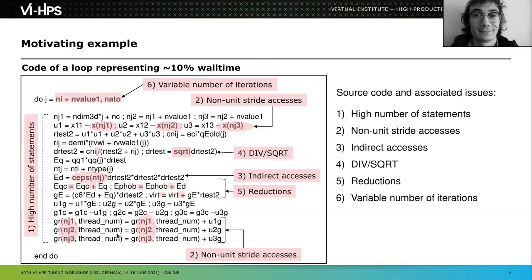We also see reductions — lots of additions using the same non-unit strided indices calculated above. These are the six major issues we can visually detect just by looking at the code patterns and the operations being performed.